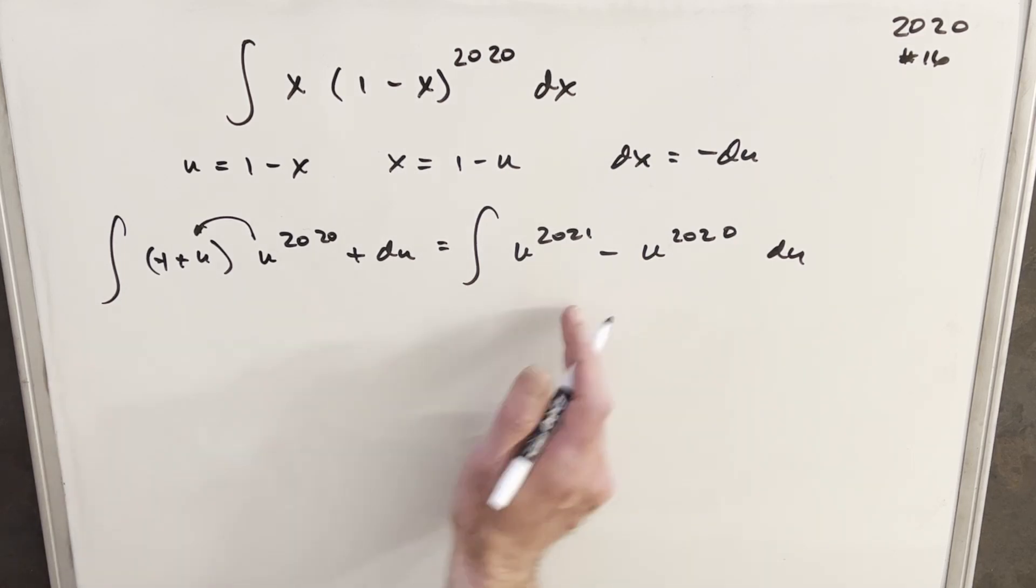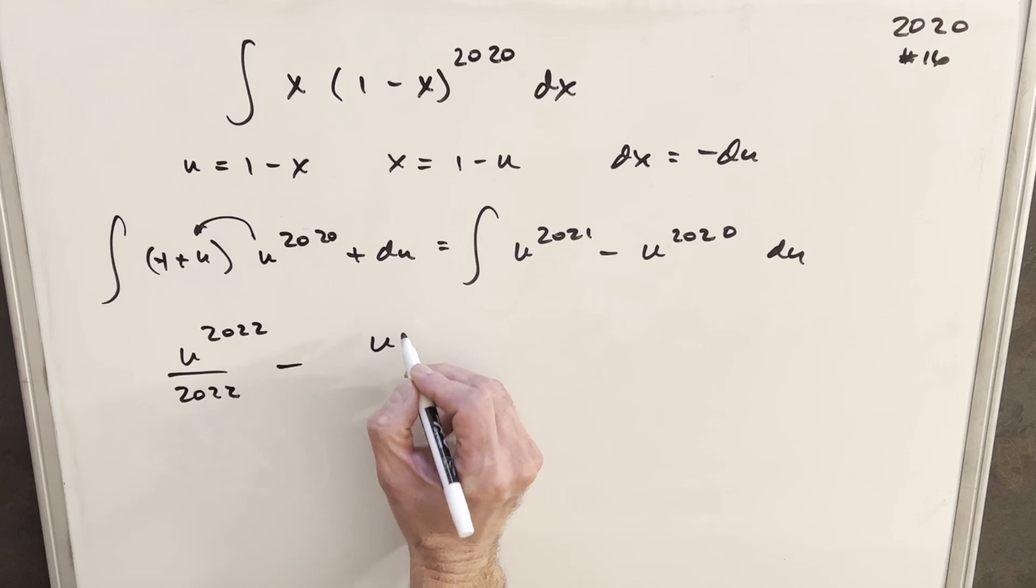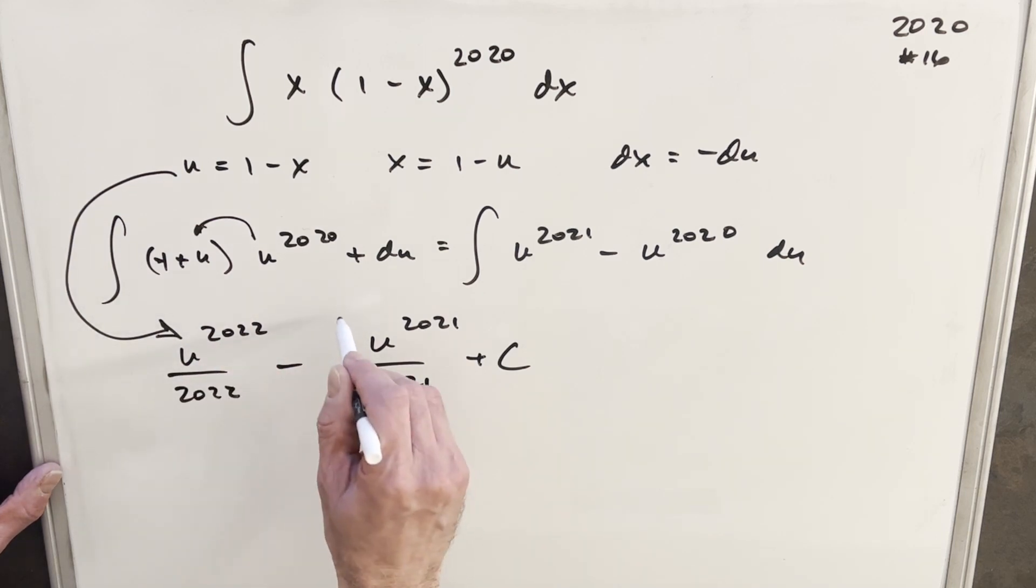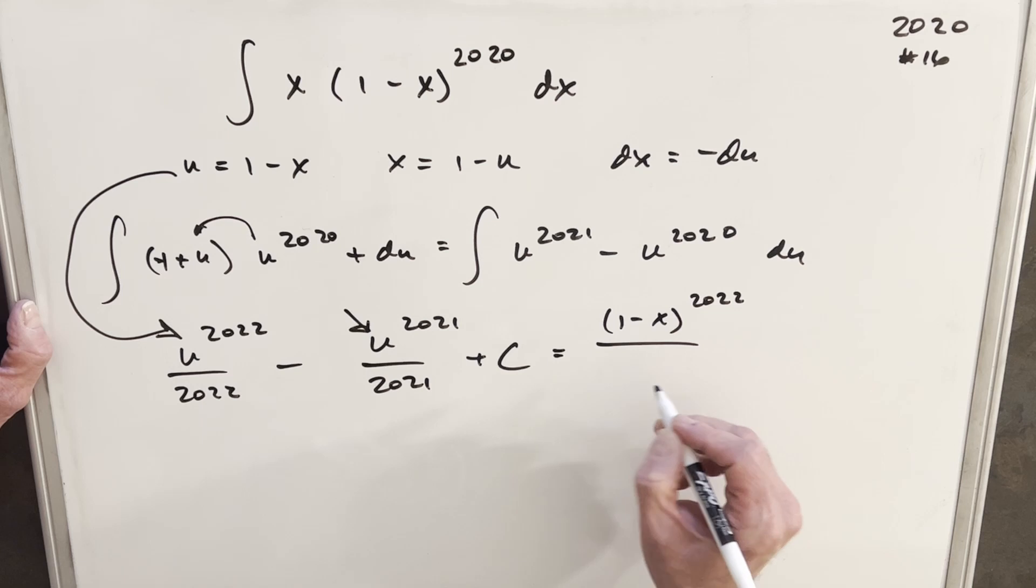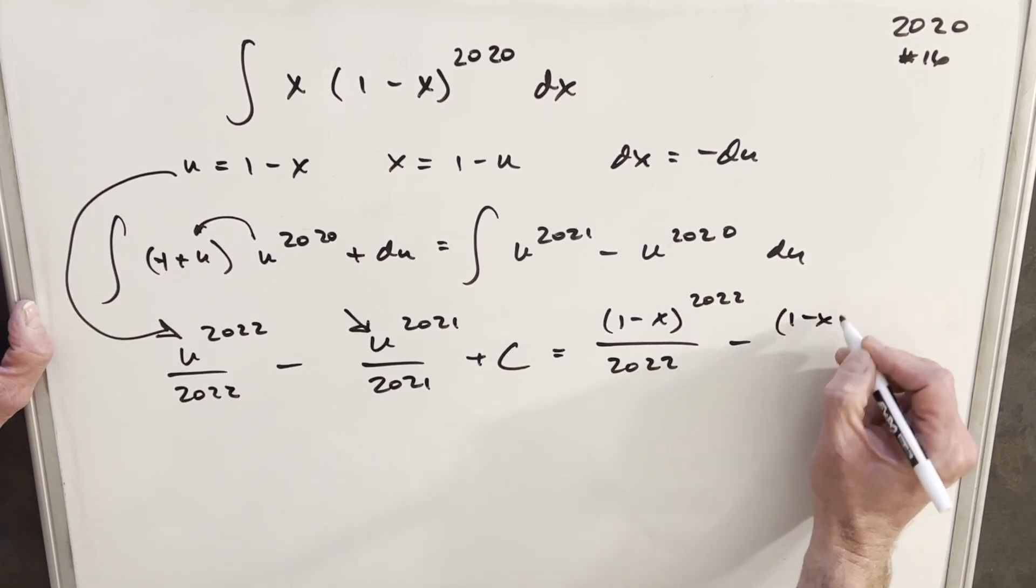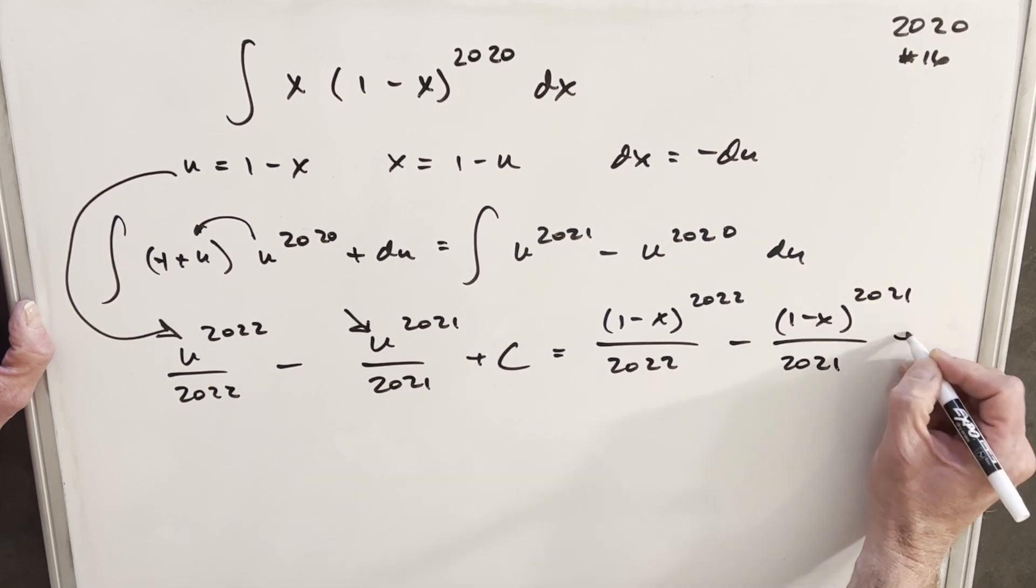And this is actually going to be quite easy because we're just going to use the power rule on this. So integrating, we're going to have u to the 2022 over 2022 minus here, we're going to have u to the 2021 over 2021. I just need to back substitute now here and here. So for a final solution on this first method, we're going to have substituting in our u of 1 minus x to the 2020 over 2022 minus 1 minus x to the 2021 over 2021 plus c.